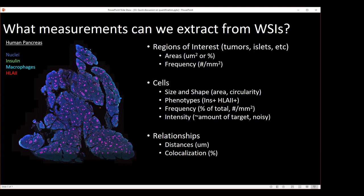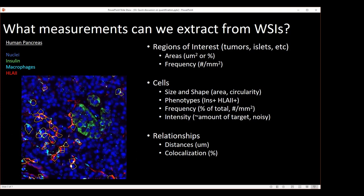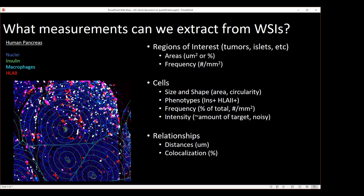We can also zoom in and see individual cells, and from there get those cells' size, area, shape, and circularity. We can use a classifier to determine the cell phenotypes — such as insulin positive or HLA-2 positive — and we can look at the frequency of any individual subset in terms of percent or per area. Within each cell, we can also measure the intensity of specific markers, which is loosely related to the amount of protein in the cell, though this is a very noisy metric. In addition to individual cells, we can look at relationships between cells, such as the distance between a cell and the nearest region of interest — in this case, an islet — or the co-occurrence of two different markers in terms of the percent of all cells.